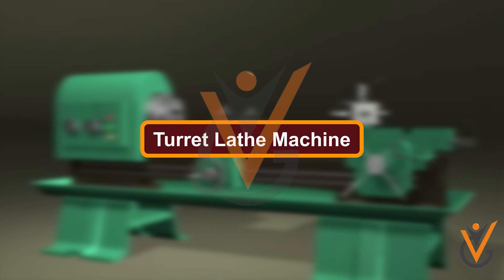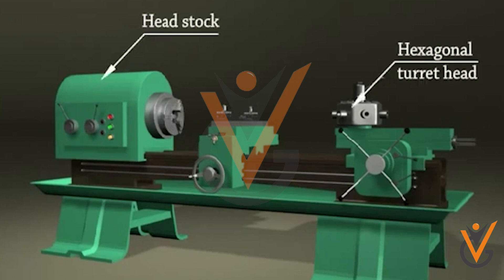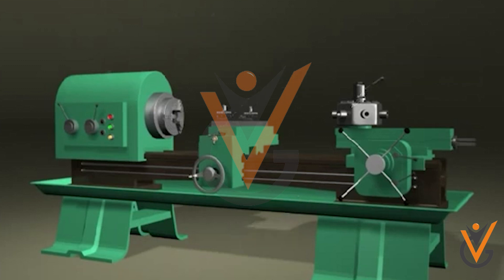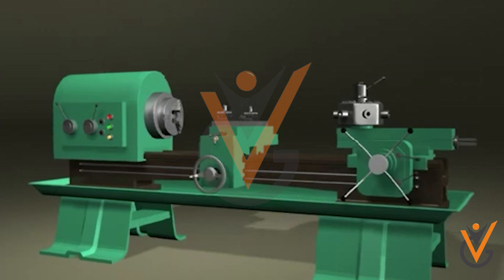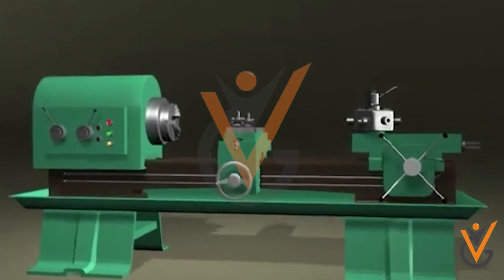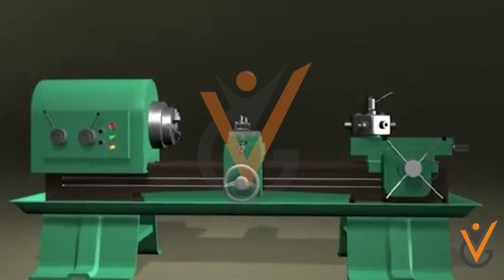Turret lathe machine is a production machine used for the production of products on a large scale. It basically handles heavy-duty workpieces. The distinguishing feature of this type of lathe is that the tailstock is replaced by a hexagonal turret.